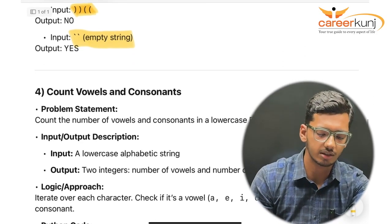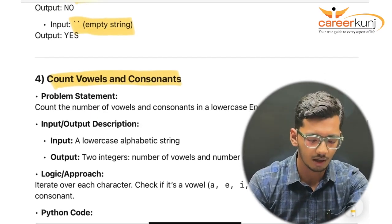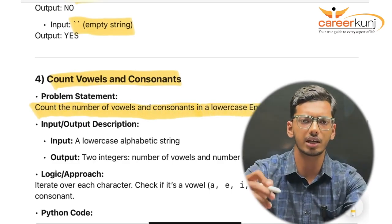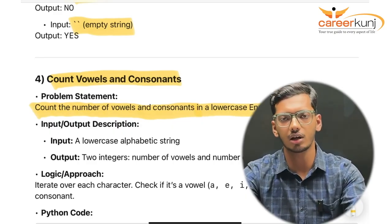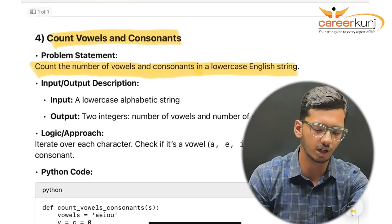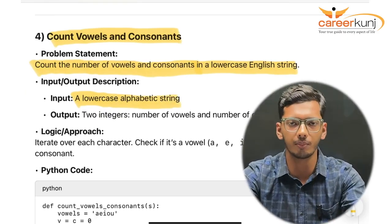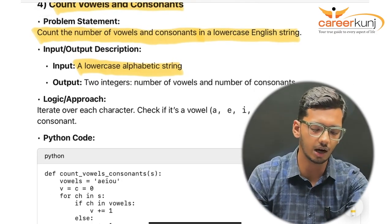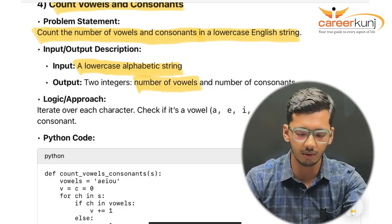Coming to the fourth question: counting vowels and consonants in a string. The problem is to count the number of vowels and consonants in a lowercase English string. The input is a lowercase alphabetical string — no symbols or numbers, only letters. The output is two integers: the number of vowels and the number of consonants.